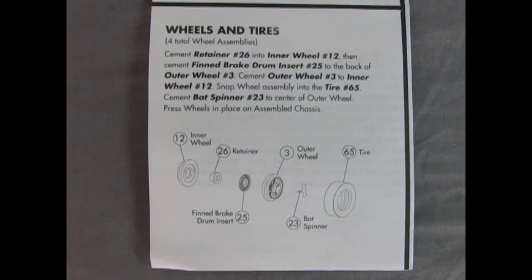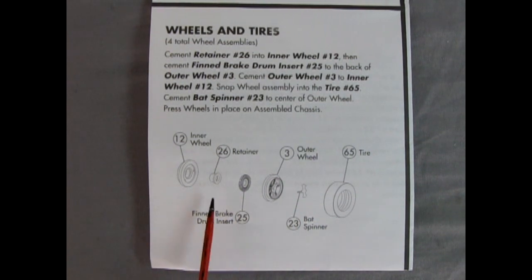Next up, we have our wheels and tires. And make sure you don't lose one because if the Batmobile loses a wheel, the Joker gets away. Here's the tire, the bat spinner, the outer wheel, a finned brake drum insert, a wheel retainer, and the inner wheel.